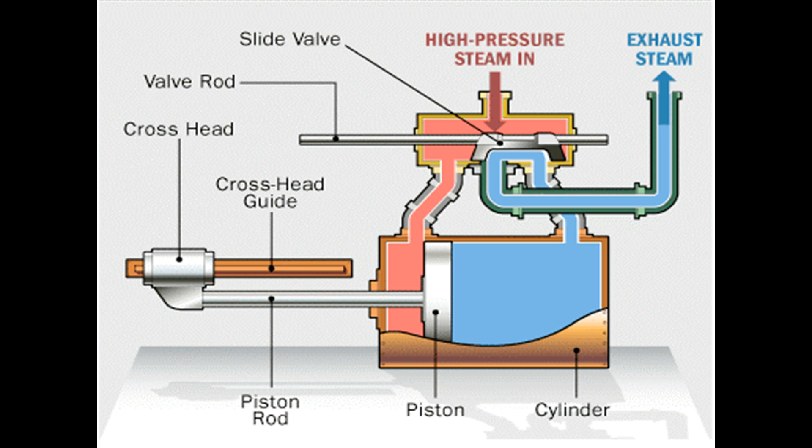The slide valve is in charge of letting high-pressure steam into either side of the cylinder. The control rod for the valve is usually hooked into a linkage attached to the cross-head, so that the motion of the cross-head slides the valve as well. On a steam locomotive, this linkage also allows the engineer to put the train into reverse. The exhaust steam simply vents out into the air.